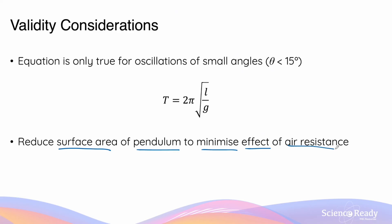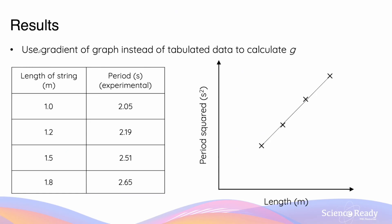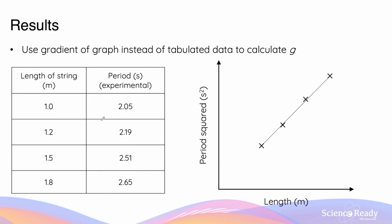The third point regarding validity is the validity of the results — specifically the period of oscillation measured for each string length. As the length of the string increases, so does the oscillation duration. A common mistake is using a single pair of data — for example, one length of one meter and one period of 2.05 seconds — and plugging it into the equation to calculate g. Although this gives a number, it's an invalid way of calculating g.